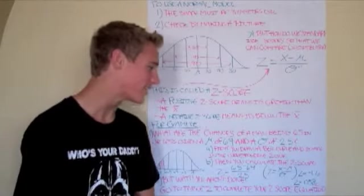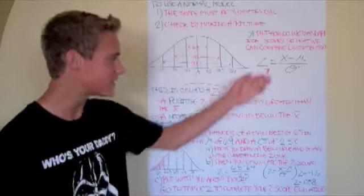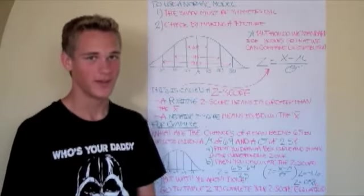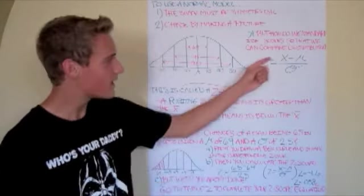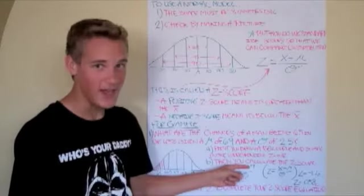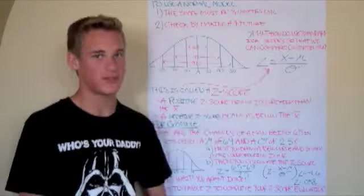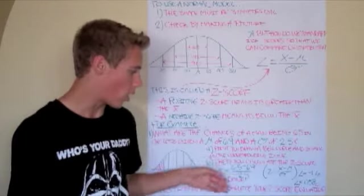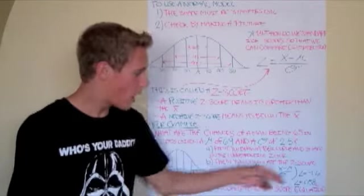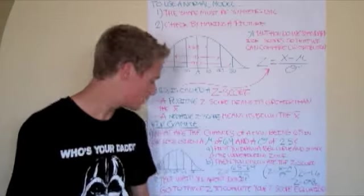Then, you have to calculate the z-score using this equation that I told you earlier. 65 is your x, 69 is your mean, and 2.5 is your standard deviation, which, when all put together and added up, equals negative 1.6.